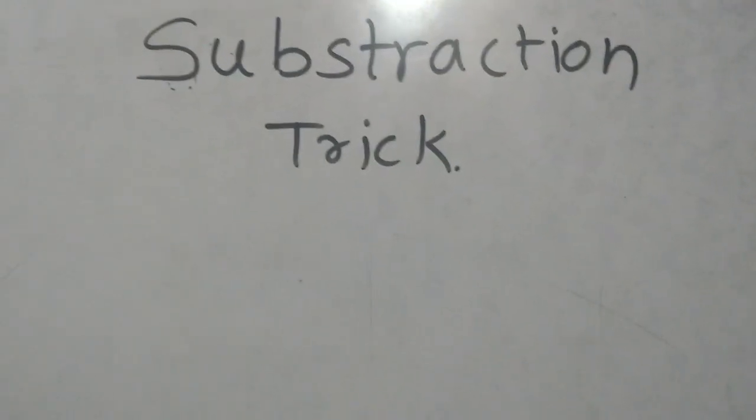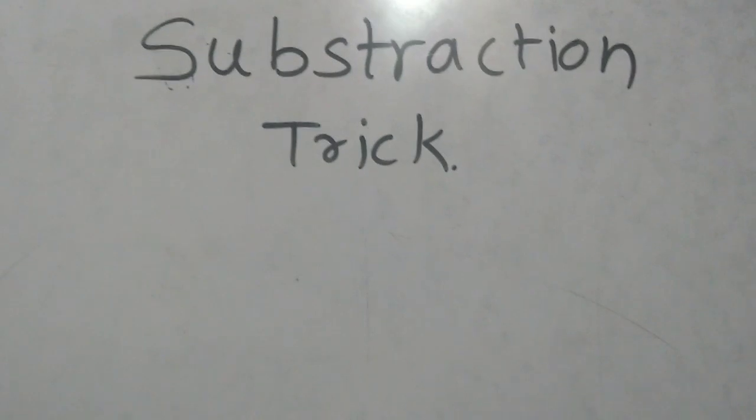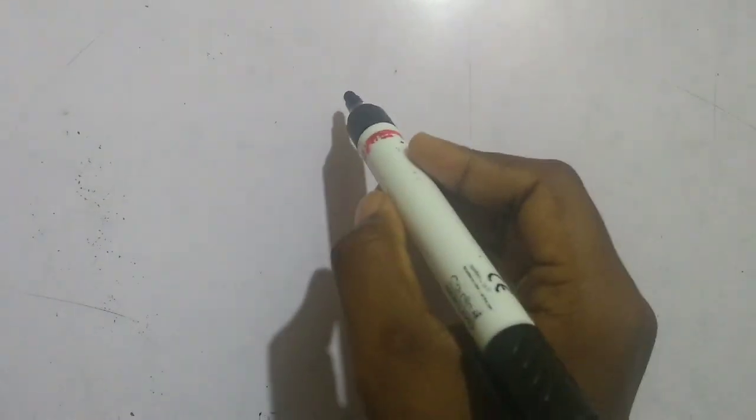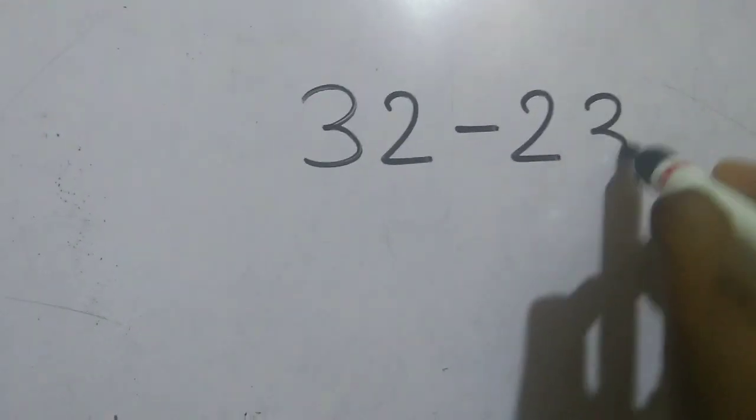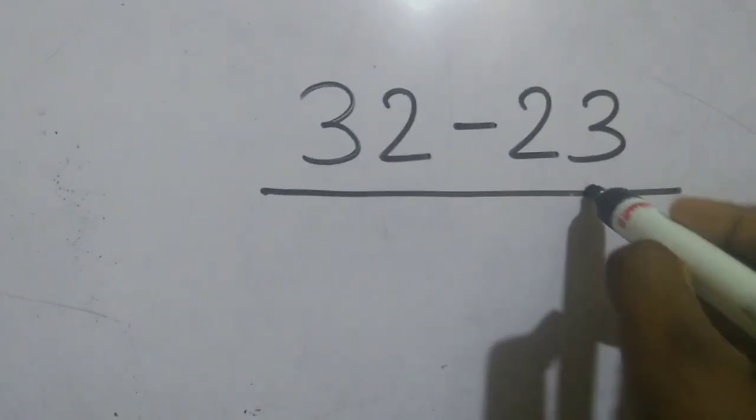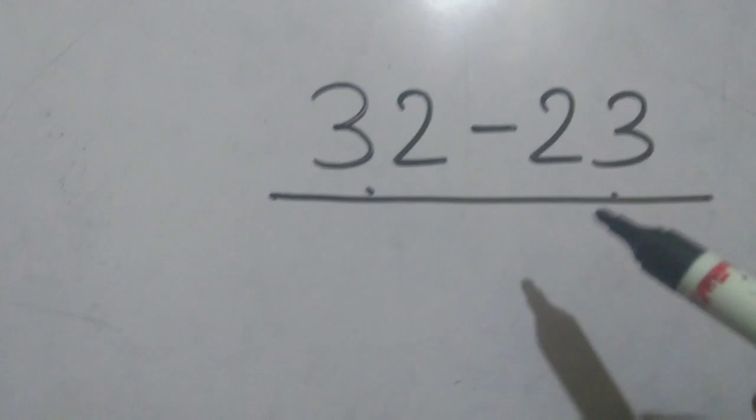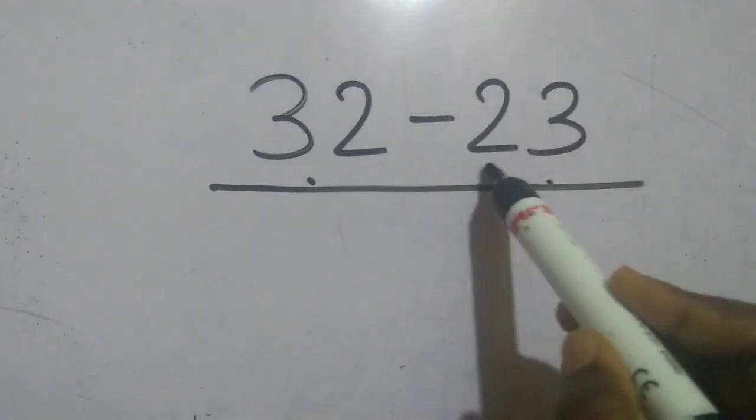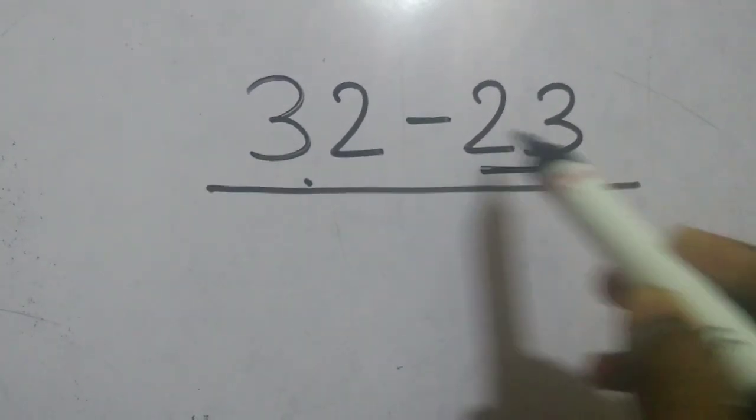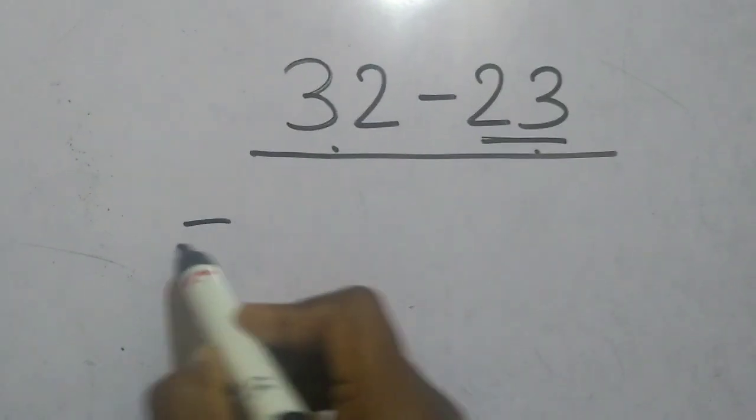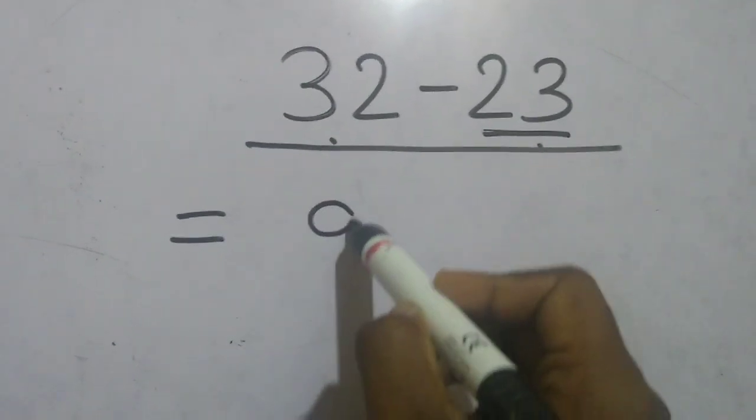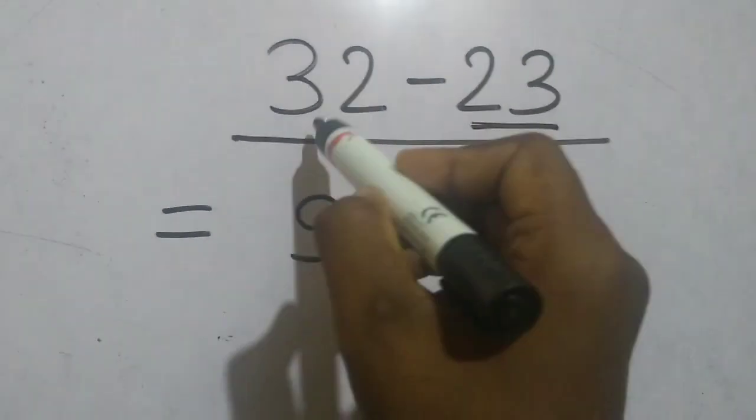What's good guys, this is Akash and here I have a new subtraction trick for you. Suppose you have given numbers like 32 minus 23, we have to subtract 23 from 32. What do you observe here guys? Here 23 is opposite of 32. If this case comes, in answer you have to multiply 9 with